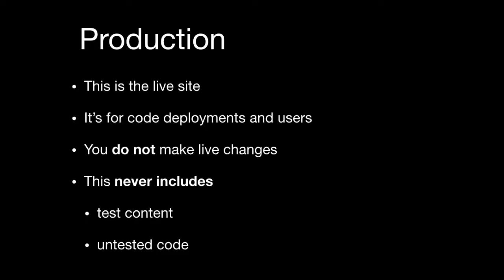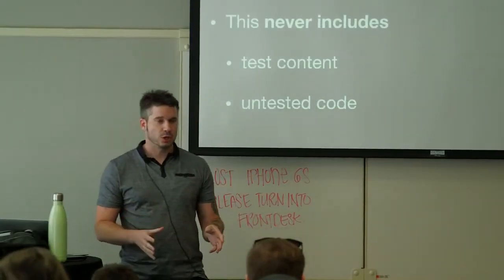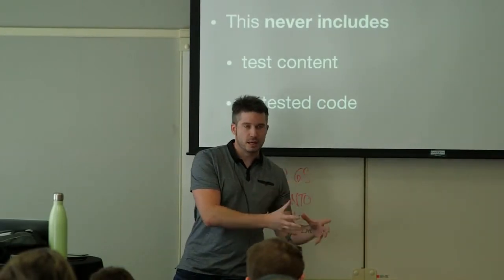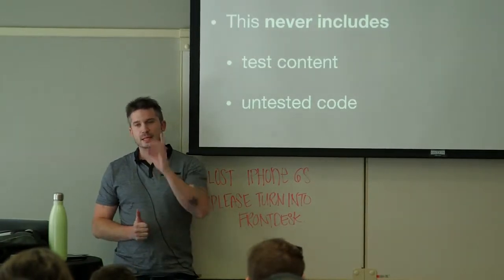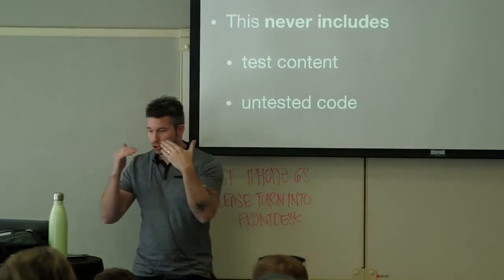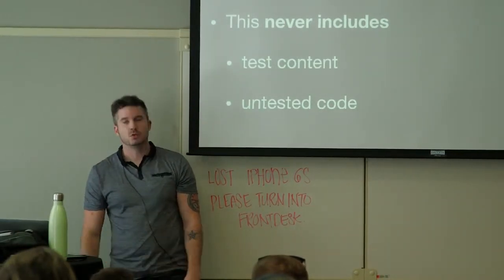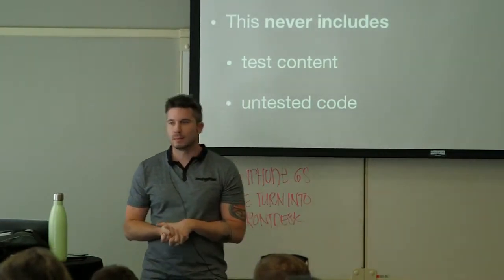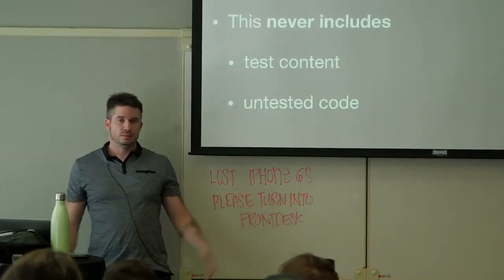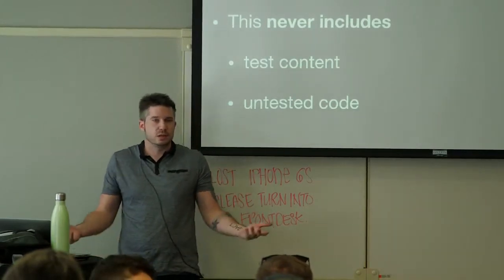Development is for writing code. Staging is for deployments and testing. Production, or live, is for the live site — this is for code deployments and users. Maybe you're running a blog and a designer and one other developer are all working on it — that's three people contributing code to your codebase. It needs to be done on development, managed in source control, and then deployed after it passes testing. You should never make live changes in production. People are interacting with your site.